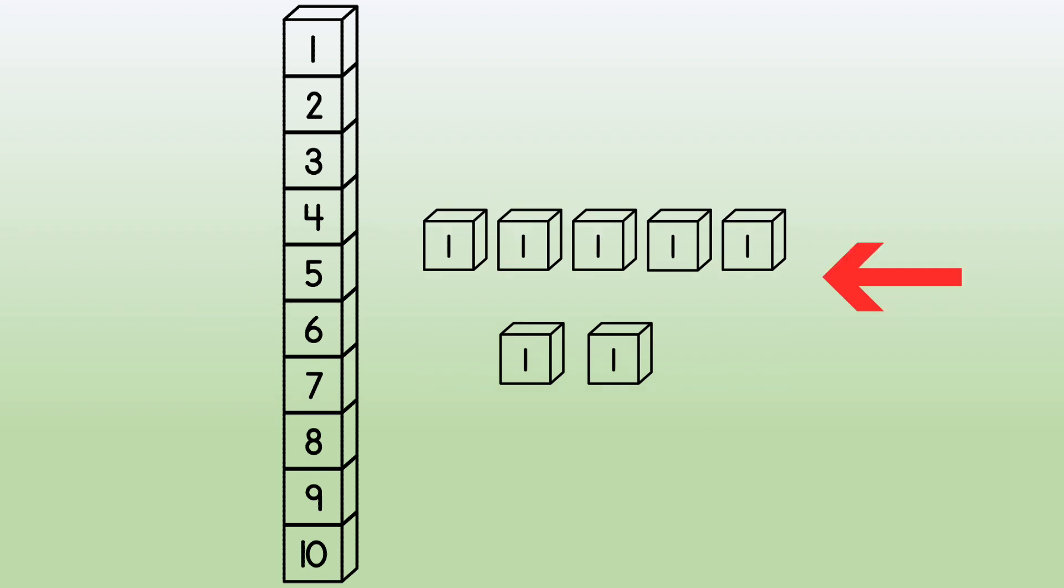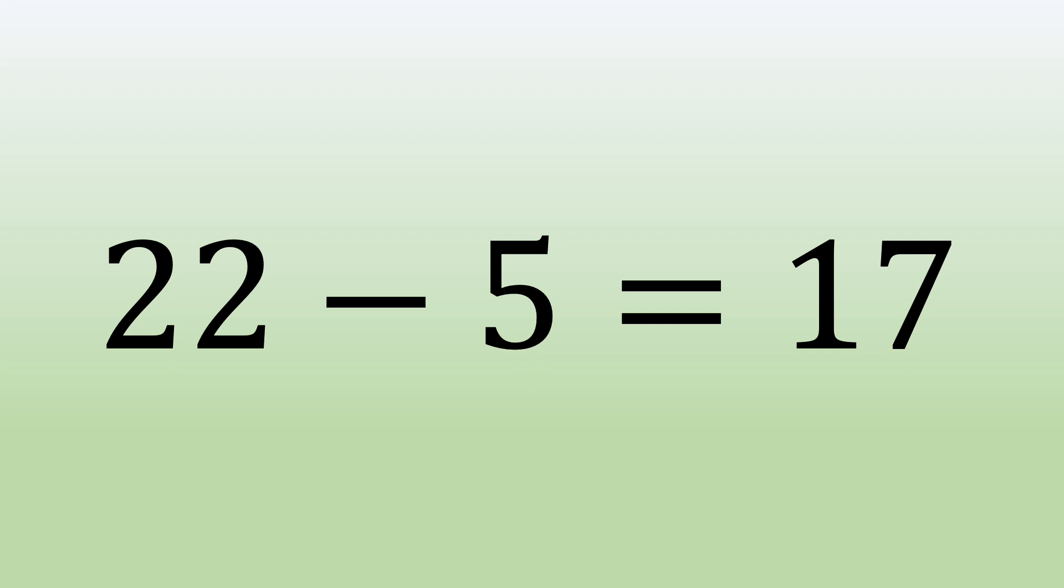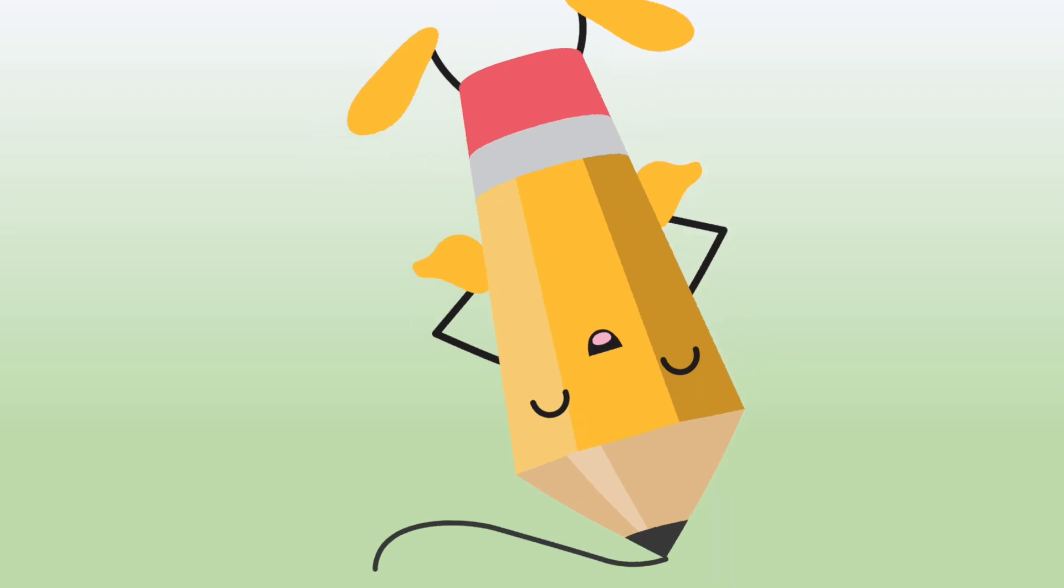1 10 and 7 ones. That gives us 17. 22 minus 5 equals 17. We just regroup while subtracting.